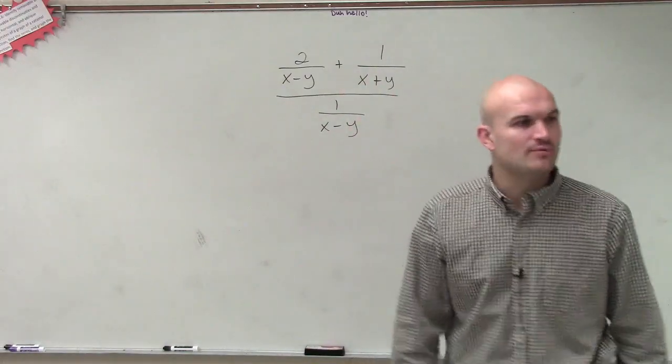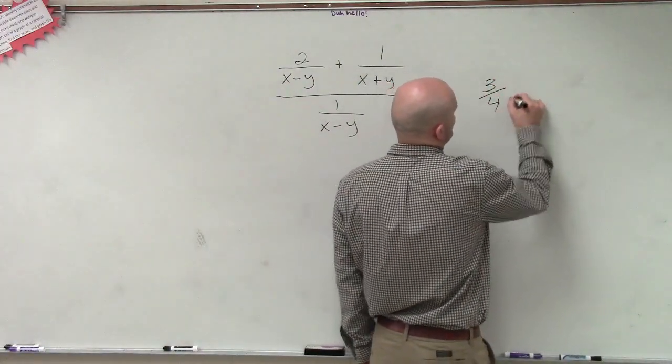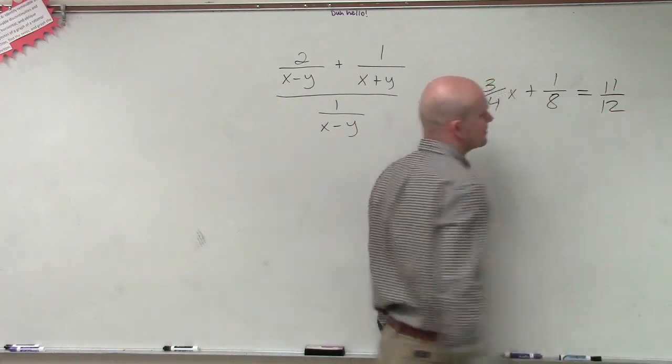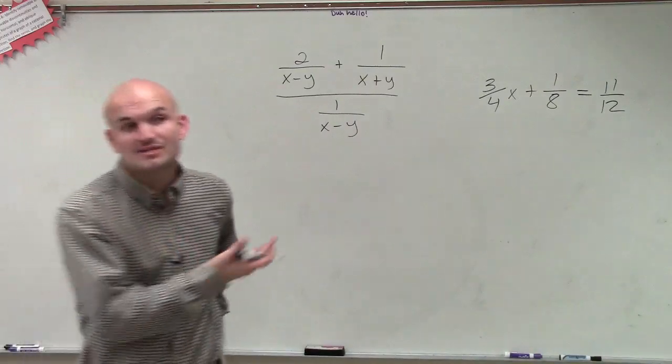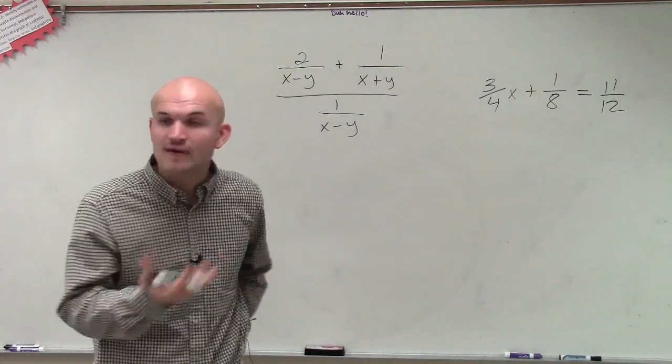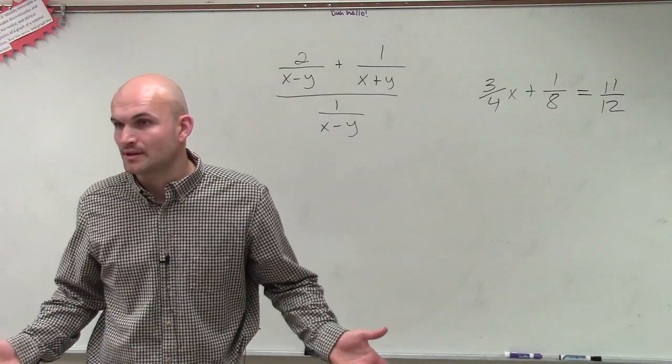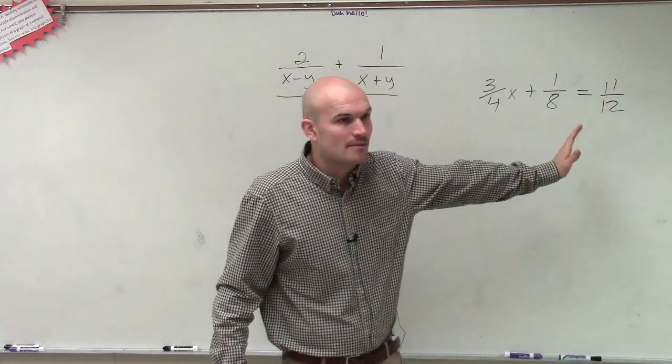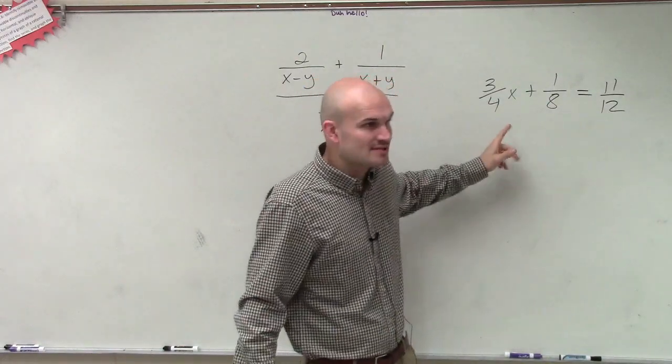When you guys were learning equations, one thing we had is, let's say I had like 3 fourths x plus 1 over 8 equals 11 twelfths. If you had a problem like this, one of the ways to solve an equation like this is what we call fraction busting. Just get rid of all of the fractions. So what we would do is we'd multiply everything by our least common multiple, our least common denominator, to get rid of the fractions.